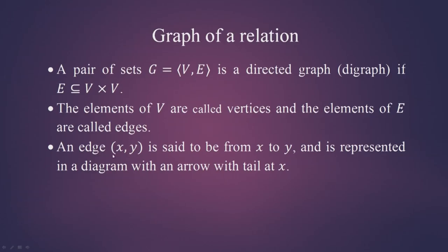An edge (x, y) is said to be from x to y and is represented in a diagram with an arrow with a tail at x and the head at y. Now let us look at examples of such graphs.